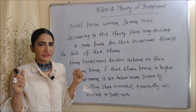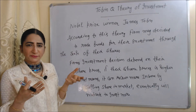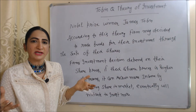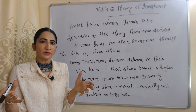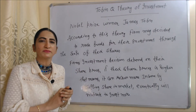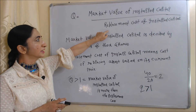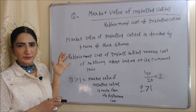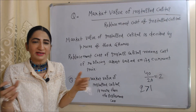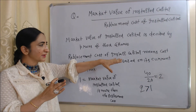Now we will see Tobin Q theory of investment. This theory is given by Nobel Prize winner James Tobin. According to this theory, a firm may decide to raise funds for their investment through the sale of their shares. Firm investment decisions depend on the prices of their shares — if prices are high, the firm receives more money by selling shares and is motivated to invest more. Q equals market value of installed capital over replacement cost of installed capital. Market value of installed capital is decided by share prices, and replacement cost means the cost of replacing an asset based on its current price.